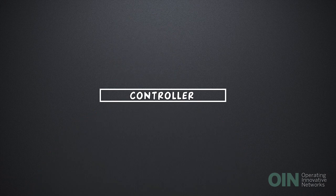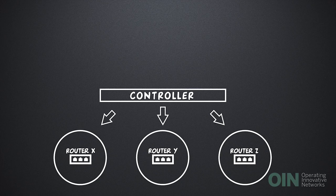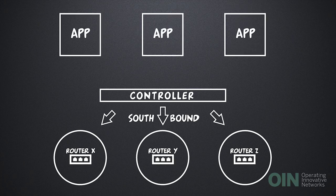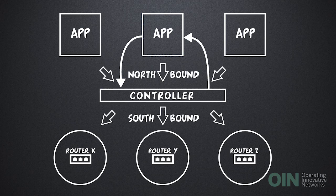In Software Defined Networking, centralized controllers talk to network devices about how they should handle traffic. This back and forth between the controller and the forwarding devices happens through Southbound APIs. The network controllers also talk to network applications that define what kinds of services the network should be providing. This communication happens through Northbound APIs.